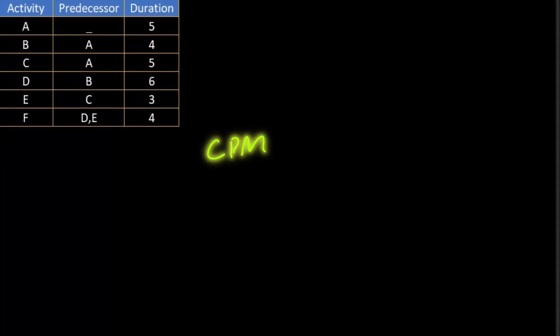CPM or critical path method provides a structured approach to sequencing tasks directly impacting the project's timeline and shows us the largest or smallest paths of the project.